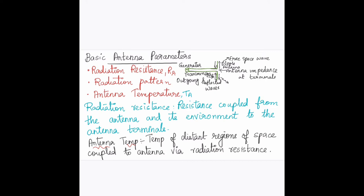The main parameters to be considered are: first, radiation resistance, denoted by Rr, which is the resistance coupled from the antenna and its environment to the antenna terminals. Second, the radiation pattern, which describes how the antenna radiates — how you can represent the electric and magnetic fields, giving the field pattern and the power pattern. Third, antenna temperature, represented as Ta.